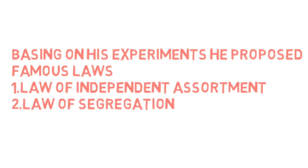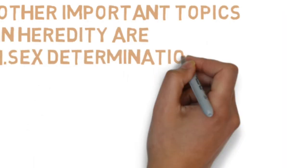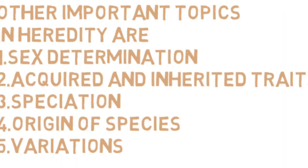he proposed two famous laws called the law of independent assortment and the law of segregation. Based on these, he proposed monohybrid and dihybrid ratios. The other important topics covered in the curriculum are sex determination, acquired and inherited traits or characters, speciation, origin of species, and variations. All these topics we will now discuss briefly one by one.